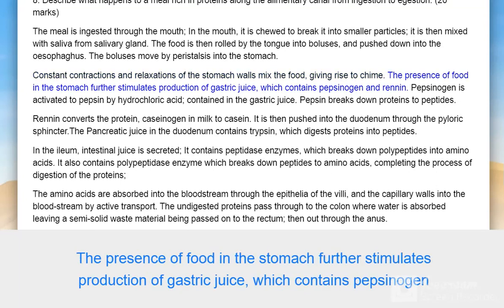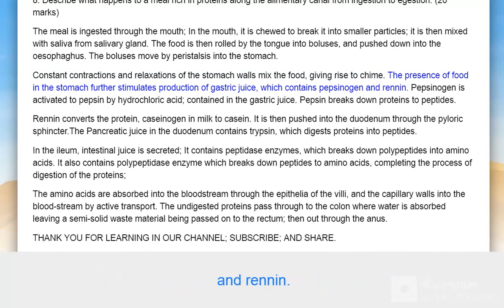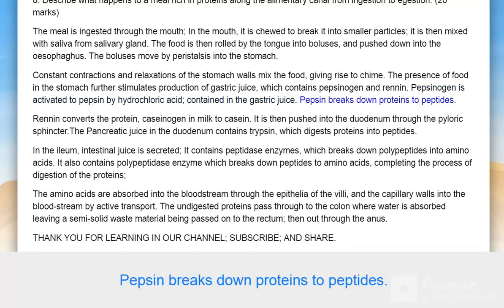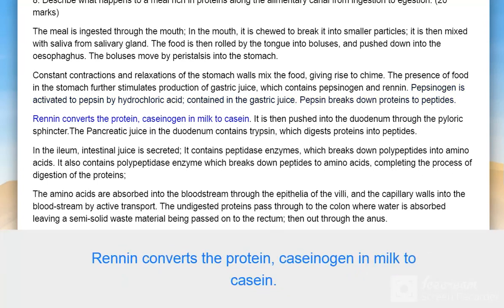The presence of food in the stomach stimulates production of gastric juice, which contains pepsinogen and rennin. Pepsinogen is activated to pepsin by hydrochloric acid contained in the gastric juice. Pepsin breaks down proteins to peptides. Rennin converts the protein caseinogen in milk to casein.